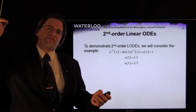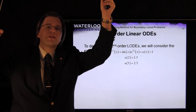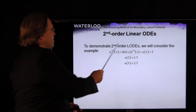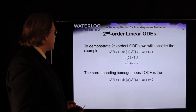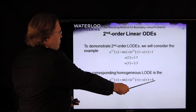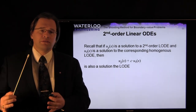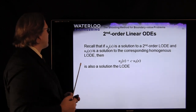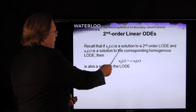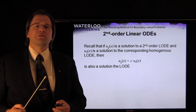The corresponding homogeneous ODE is obtained by setting the forcing function to zero. If u_g is a solution to the general linear ODE and u_0 is a solution to the corresponding homogeneous ODE, then any scalar multiple of the homogeneous solution added to the general solution is also a solution to the general linear ODE.